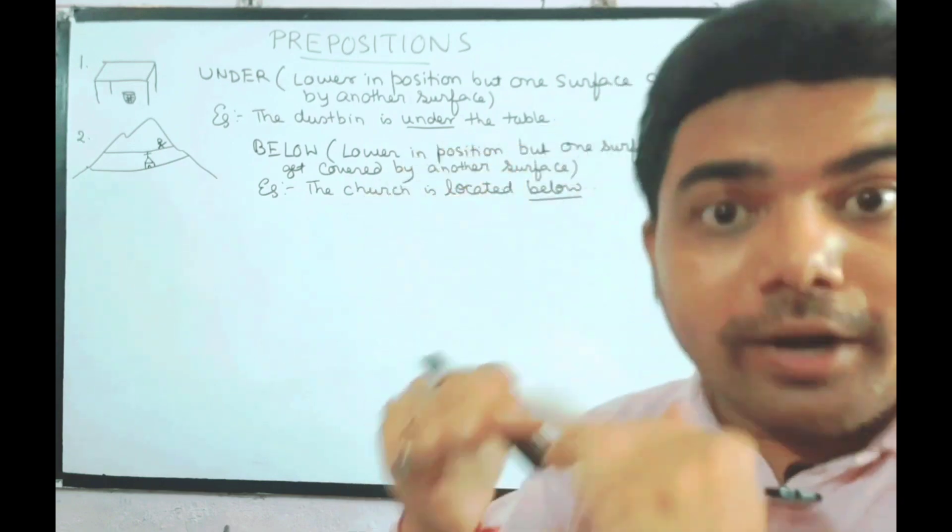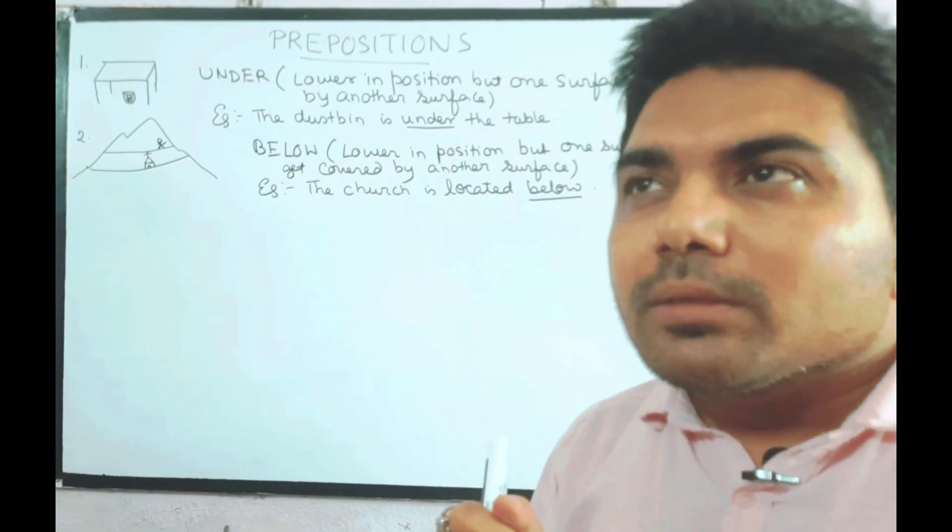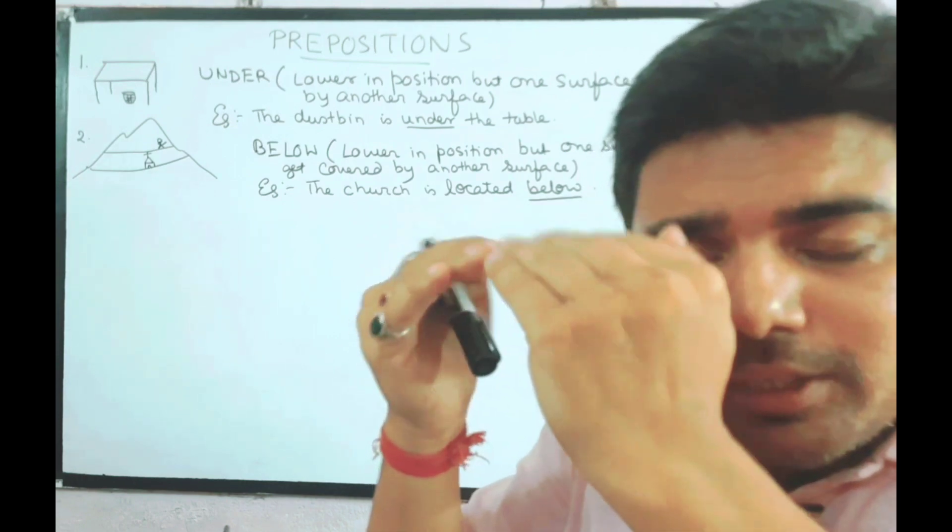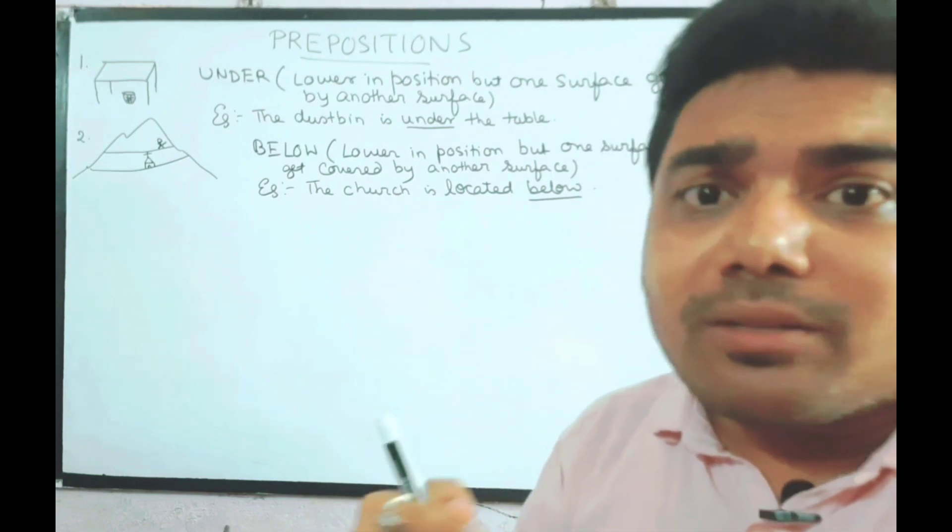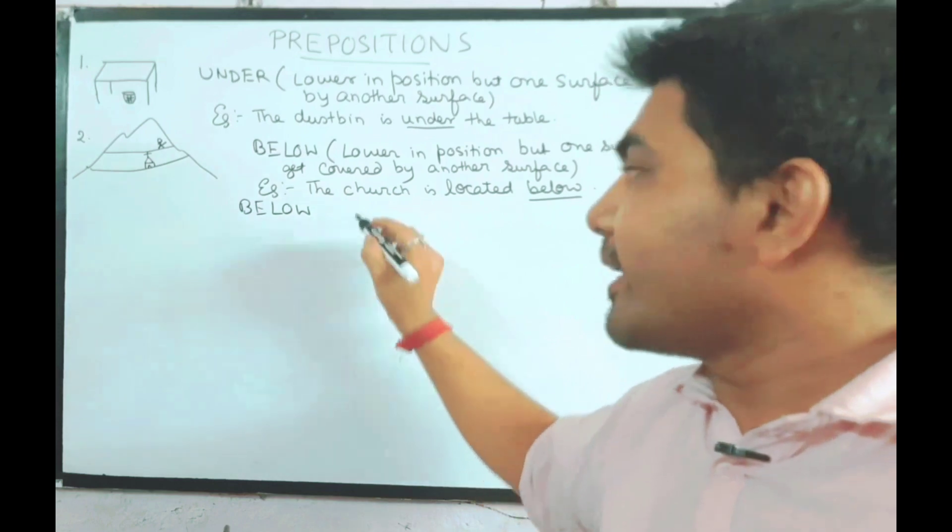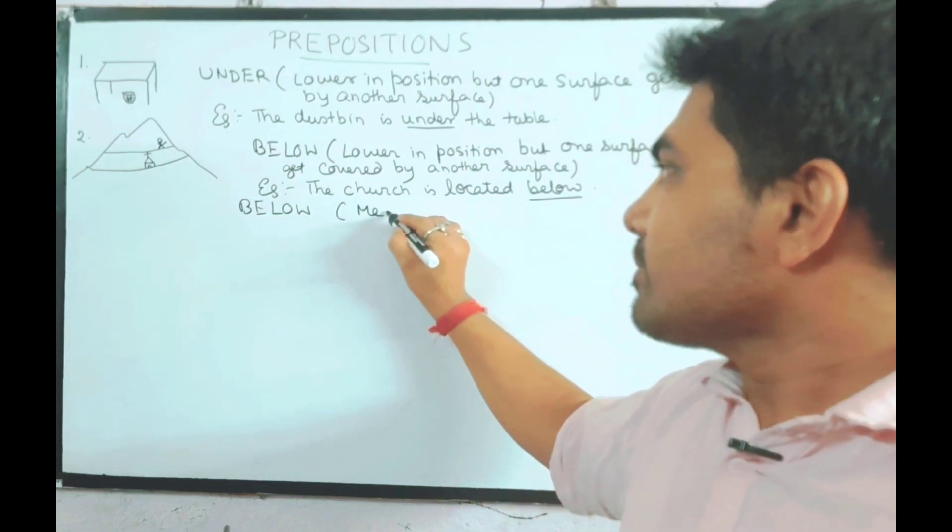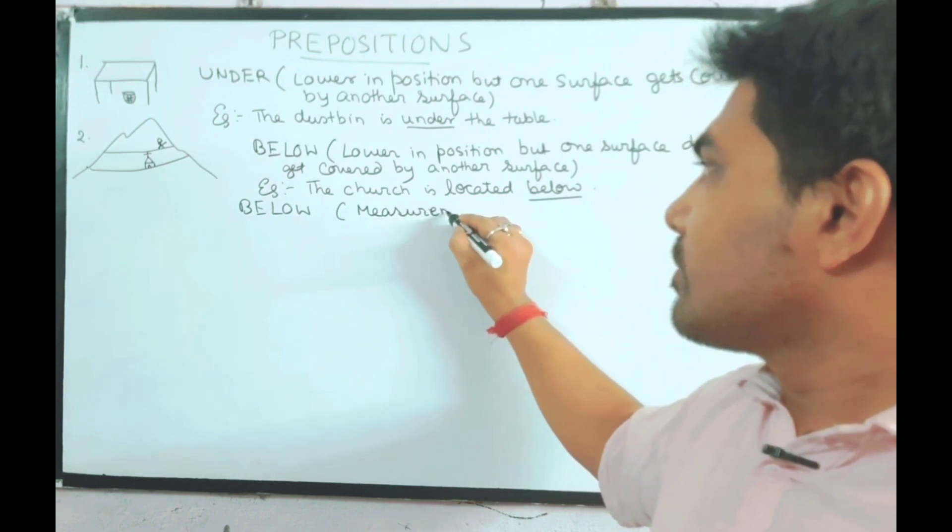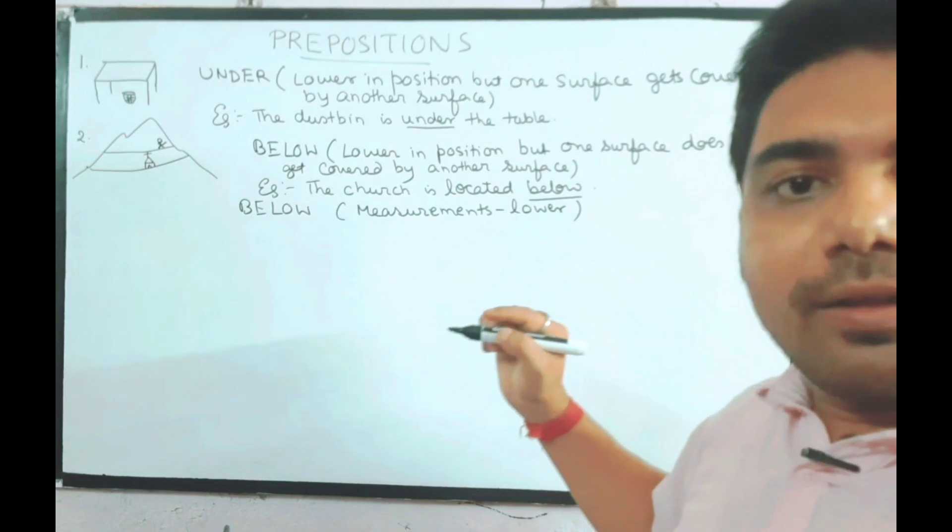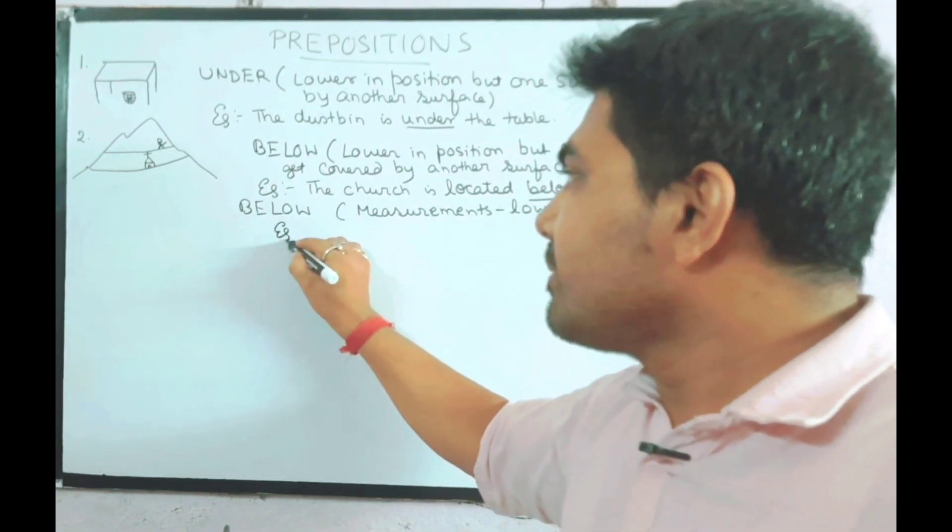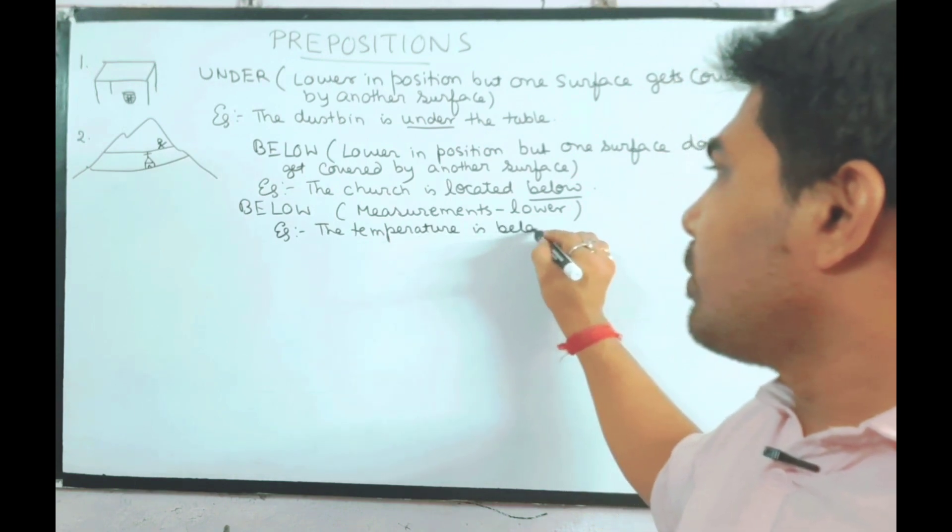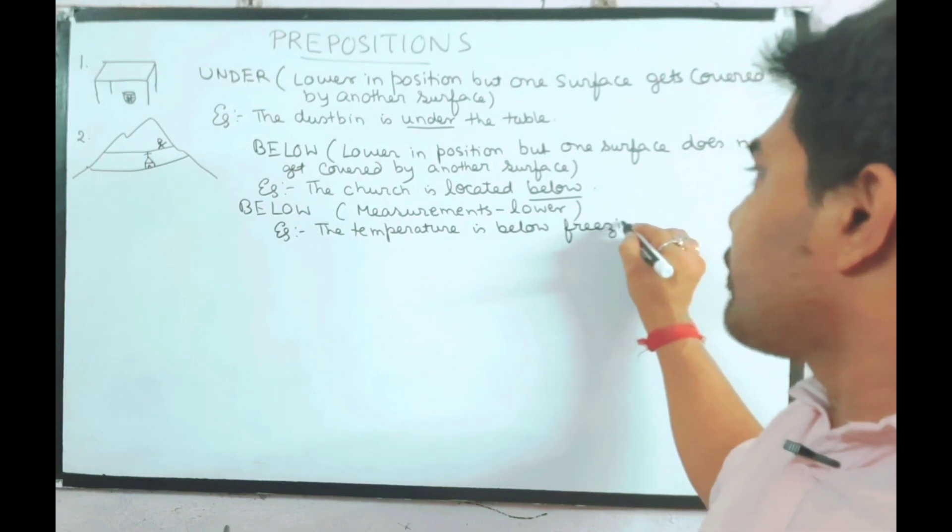Below is also used to indicate measurements which are lower. For example, I'm feeling so cold, the temperature is getting or going below the freezing point. So below also signifies lower measurements. Example: the temperature is below freezing point.